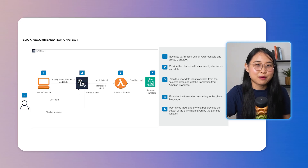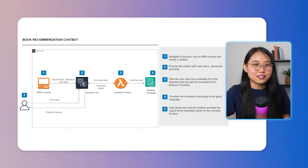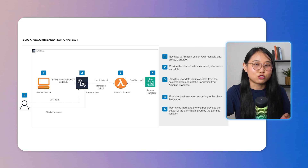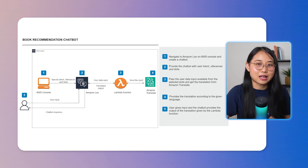Here's the architectural diagram and the steps you'll need to take. First, create a chatbot in Amazon Lex and define clear user intents. Next, specify utterances or phrases that users might say to interact with your bot. Once that's done, define slots within the intents, such as language or text, to capture the specific information needed for the translation. After that, create a Lambda function that takes the slot data and performs a translation using Amazon Translate. Finally, integrate the Lambda function back into the Amazon Lex chatbot and deliver the translation smoothly to the user.